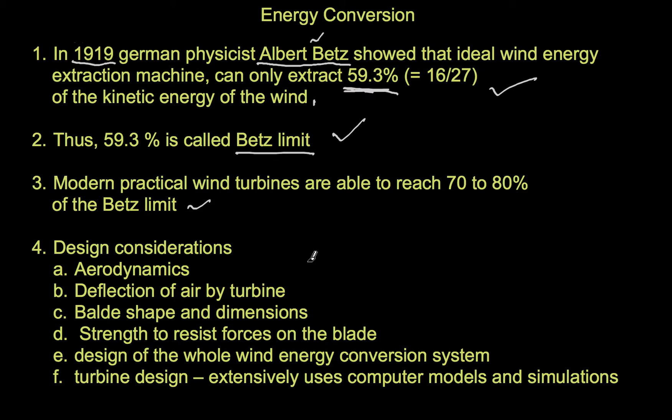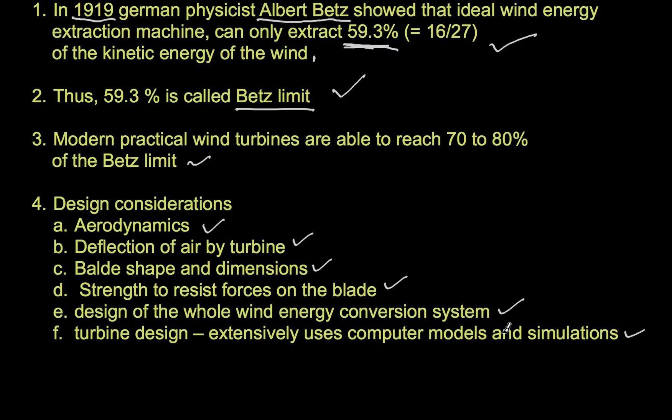Design considerations include aerodynamics - deflection of air by turbine blade shape and dimensions - as well as the strength needed to resist forces on the blade, and design of the whole wind energy conversion system. I'd like to talk about pitch control and the power curve of the turbine.